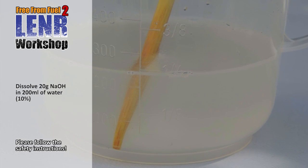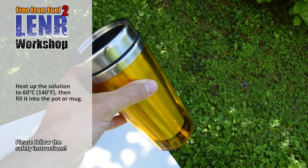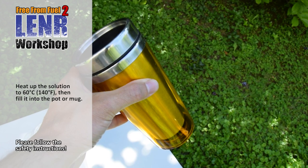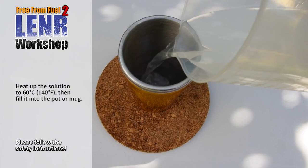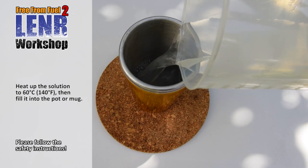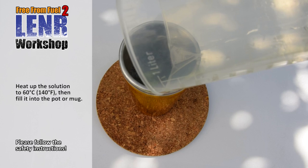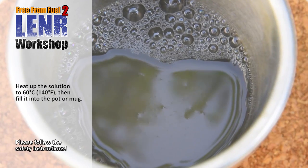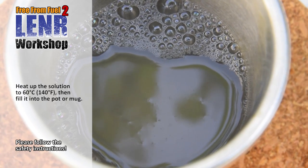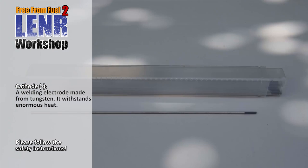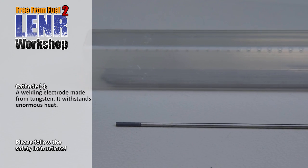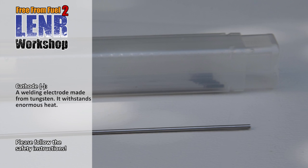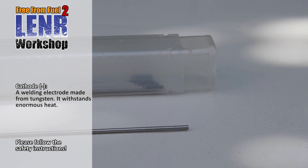Now we need a stainless steel mug or pot. I found this mug for 3 euros. It has double walls that keep the temperature. A stainless steel thermos bottle would be perfect, but then the neck would be too narrow for the camera to see inside. Heat up the solution to about 60 degrees Celsius and put the mug onto a fireproof plate. Now we need a tungsten welding electrode. It withstands great heat. You get it from the hardware store for a few bucks.